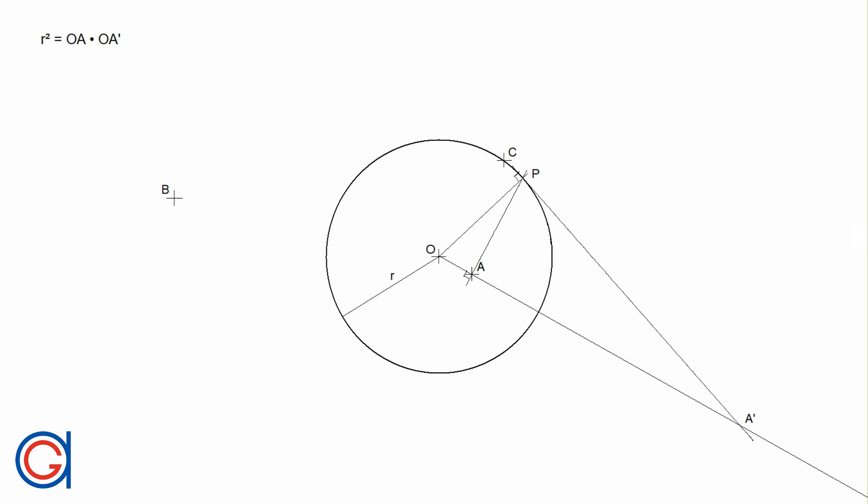So the next step we are going to locate the inverse point of the point B, which we can see located outside of the circle. The first step is to join point B with the origin O.